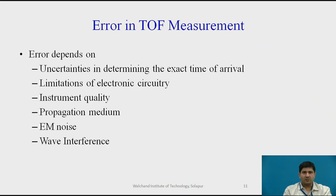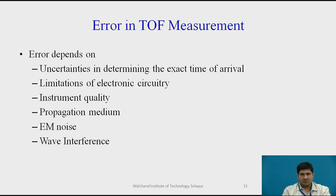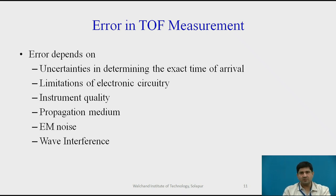When it comes to time of flight measurement, range also depends upon all the factors previously discussed. Error typically depends upon uncertainties in determining the exact time of alignment. These uncertainties depend on what you choose to define as the return signal — if you define it at the beginning of the signal, there is a higher chance of uncertainty; if you take the peak signal, accuracies are much better but you'll need to compensate for resulting differences. Limitations of electronic circuitry introduce additional error, along with instrument quality, propagation medium, electromagnetic noise, and wave interference — all of which affect time of flight measurement in range sensing.